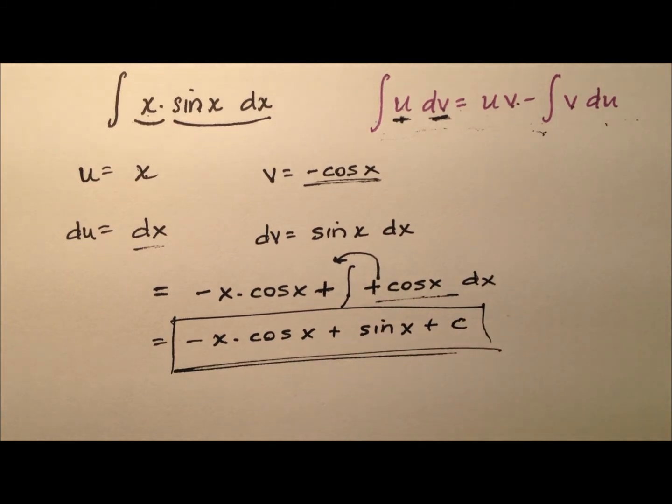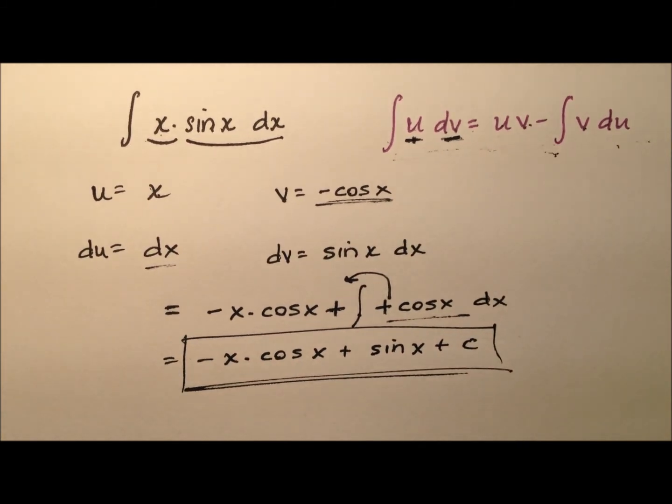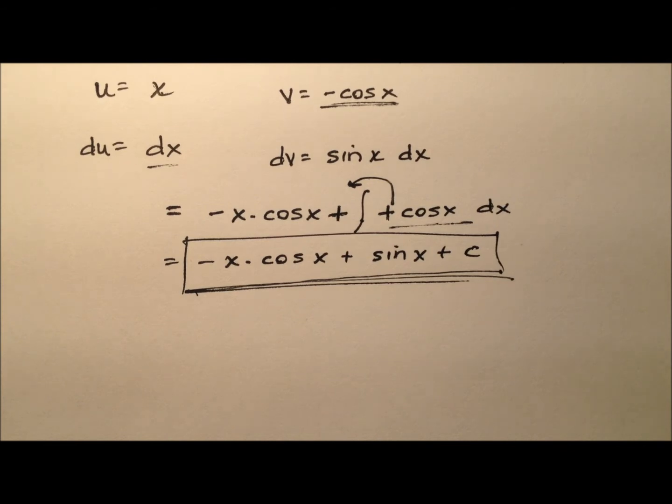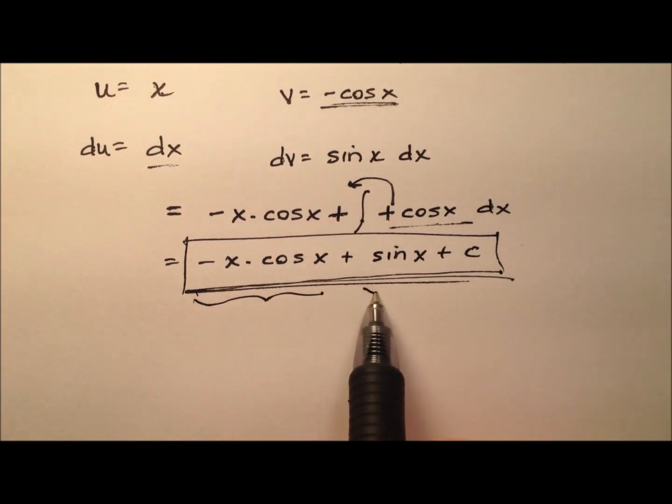So it looks like using integration by parts this should be our integral. What's good to do, let's go ahead and differentiate this just to ensure that we've done it correctly. It looks like we have two terms, we have a product rule right here and then we just have the derivative of sine x.